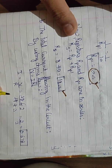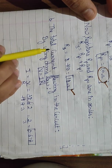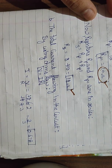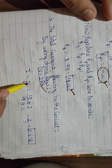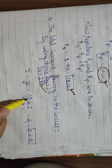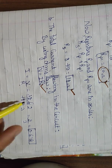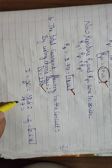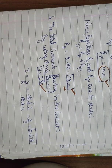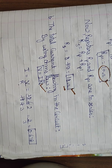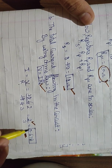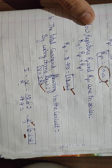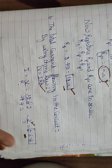For Part B — total current flowing in the circuit. Using Ohm's law: I = V/R = 12/18. When we simplify 12/18, we get 2/3 = 0.67 ampere. Ampere is the SI unit of current.